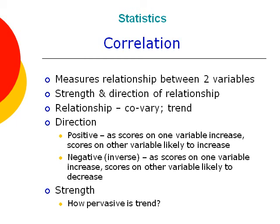By strength of relationship, I mean how pervasive the trend is. The more pervasive, the stronger the correlation. If there is no general trend in the set of scores, there is no correlation.